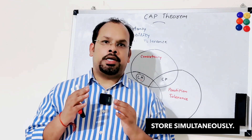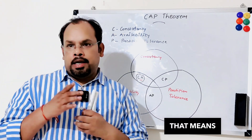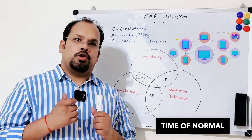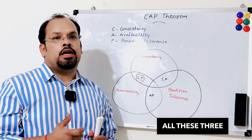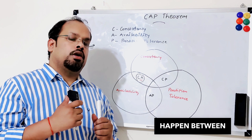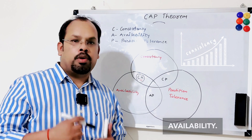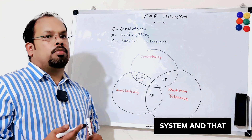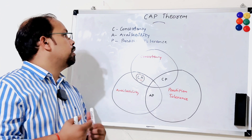or data store, simultaneously it can provide two guarantees out of these three. That means in any distributed system, at the time of normal operations we should have all three, but in case a network failure happens between nodes, we can choose either consistency or availability. That is the trade-off of a distributed system, and that decision should be made in advance — which we prefer: